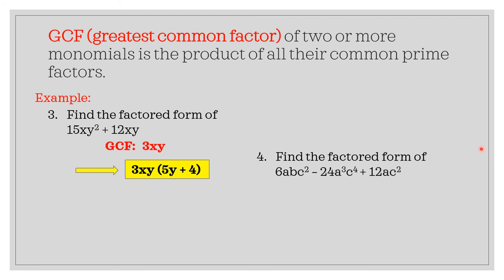Another example: find the factored form of 6abc squared minus 24a cubed c to the 4th plus 12ac squared. Let's get the numerical common factor first — we have 6, 24, and 12, and their common factor is 6. For the variable parts abc squared, a cubed c to the 4th, and ac squared, their common factors are a and c squared. So the GCF of the given expression is 6ac squared.